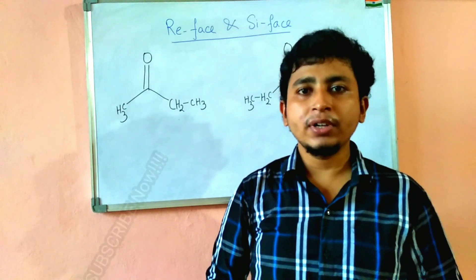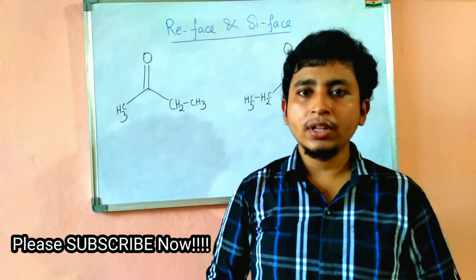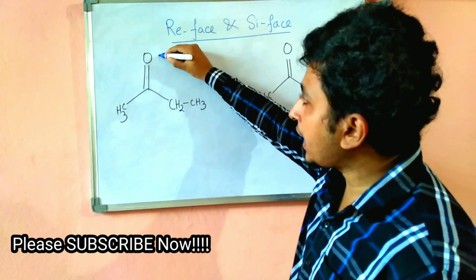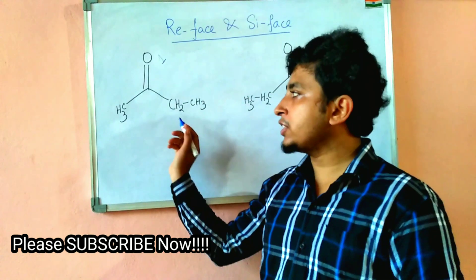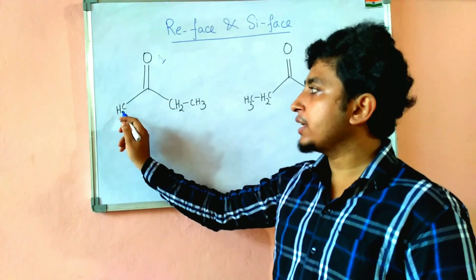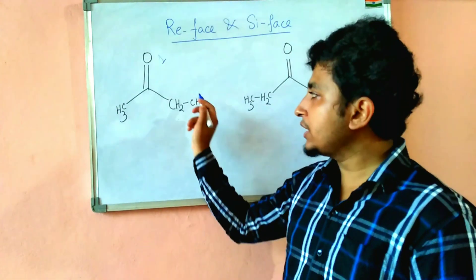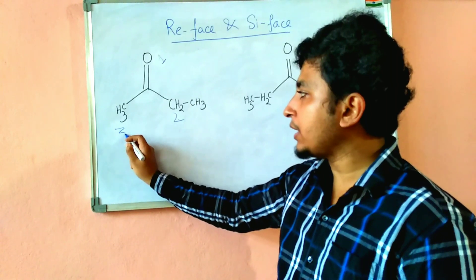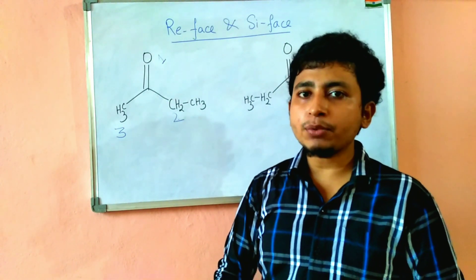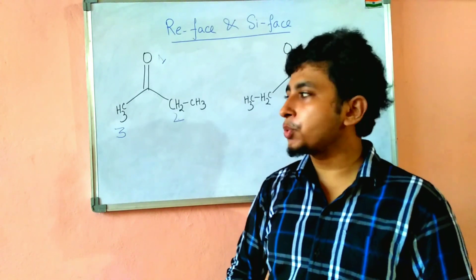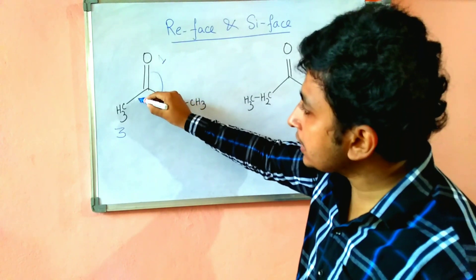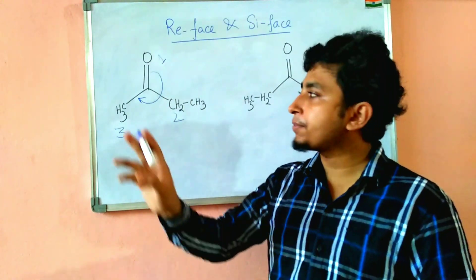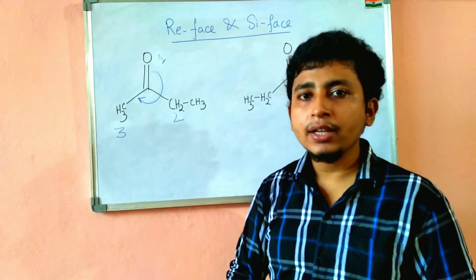For Re-face and Si-face, we have to follow a few steps. The first step is to give numbering according to the CIP rule — that means assigning the priority order. Oxygen has more priority than carbon, so oxygen gets priority number 1. Among the two carbon groups, one carbon is attached to a carbon while the other is attached to 3 hydrogens; therefore the carbon-bearing group gets priority 2 and the methyl group gets priority 3. Looking at the rotation from 1 to 2 to 3, the rotation is clockwise. When the rotation is clockwise, the front-side attack is the Re-face attack and the back-side attack is the Si-face attack.